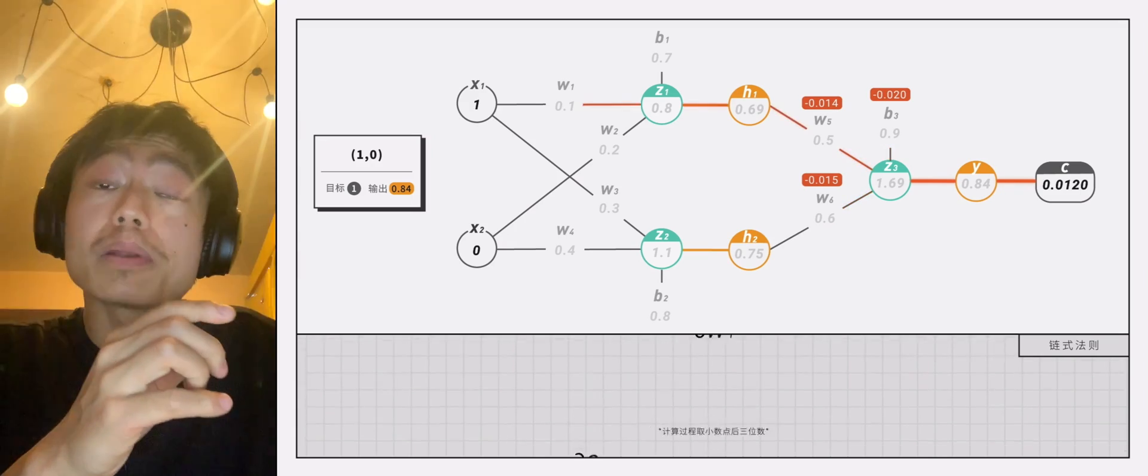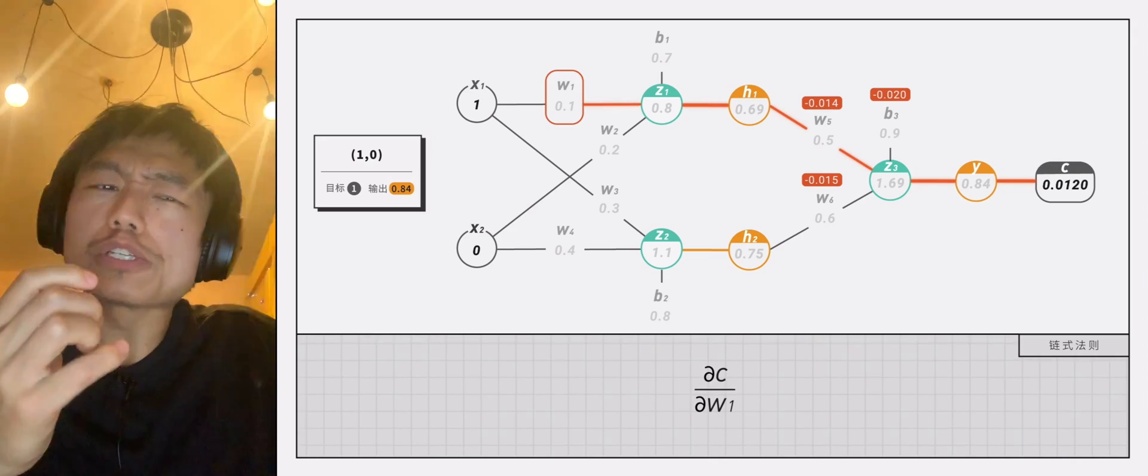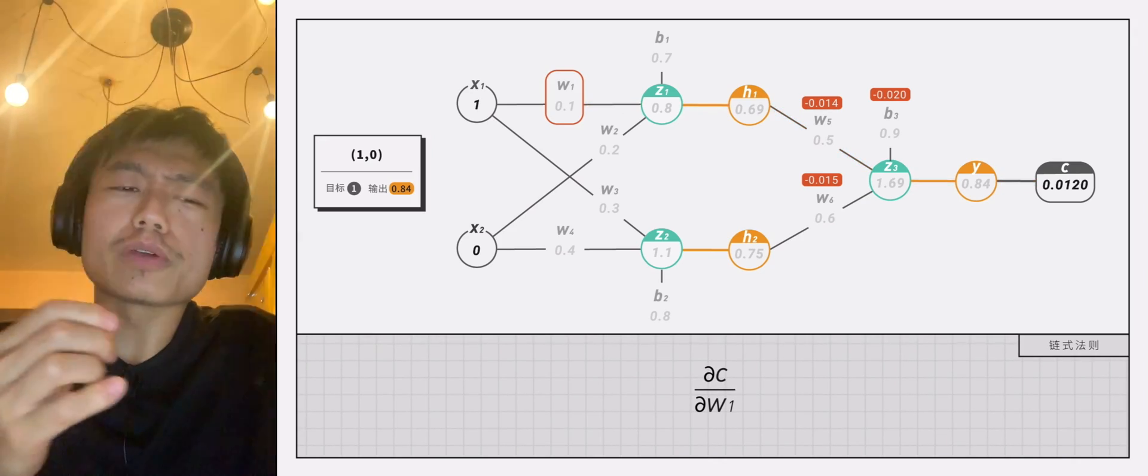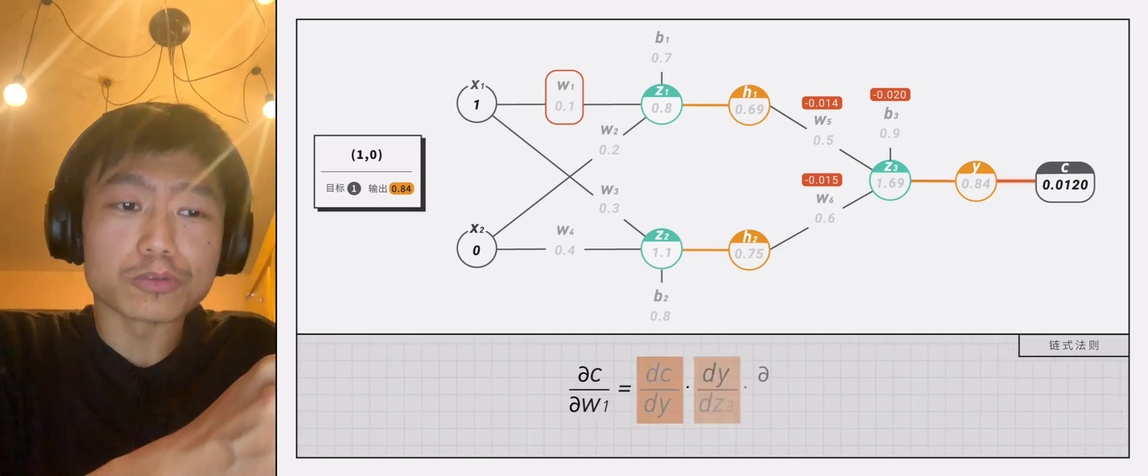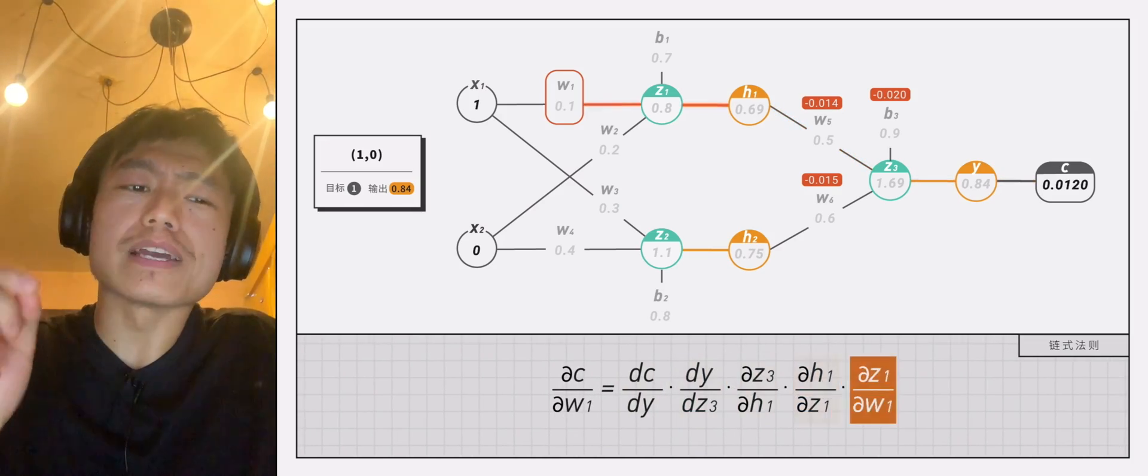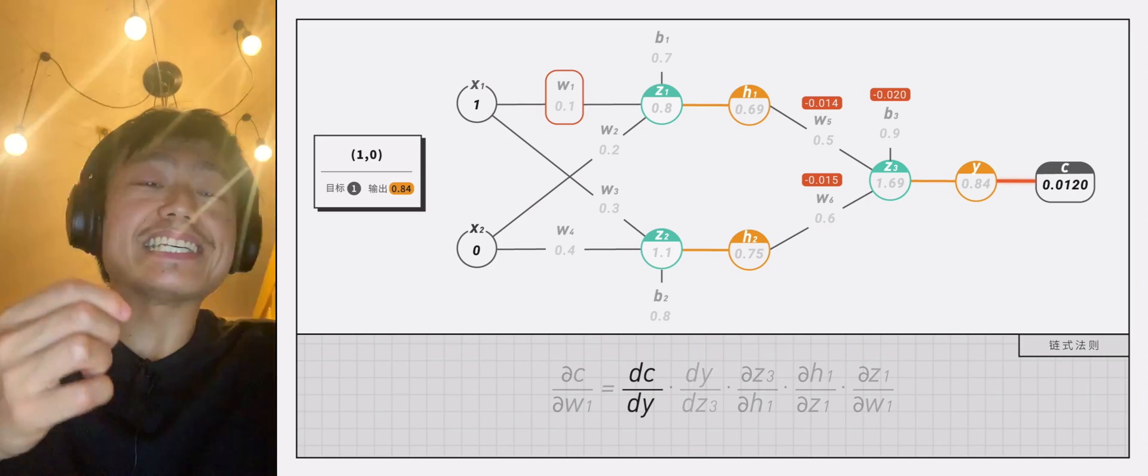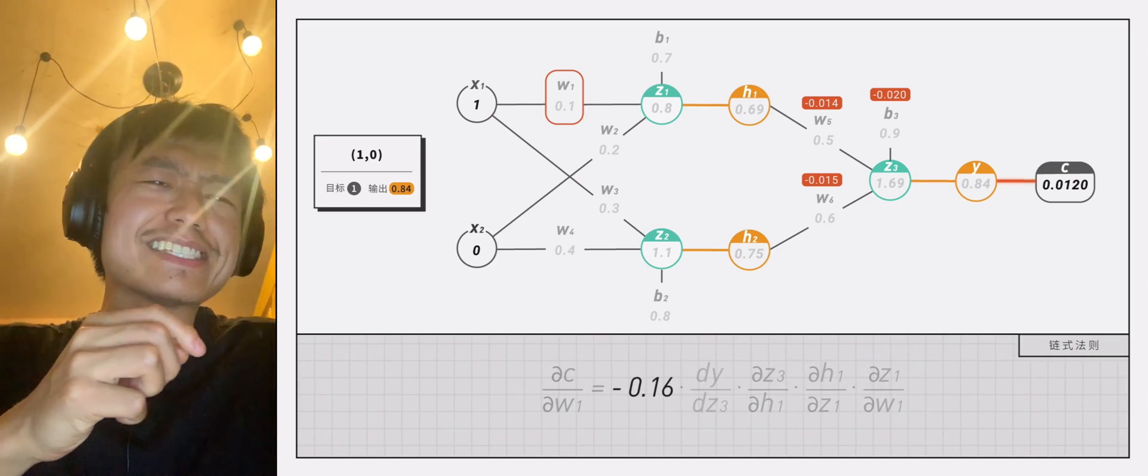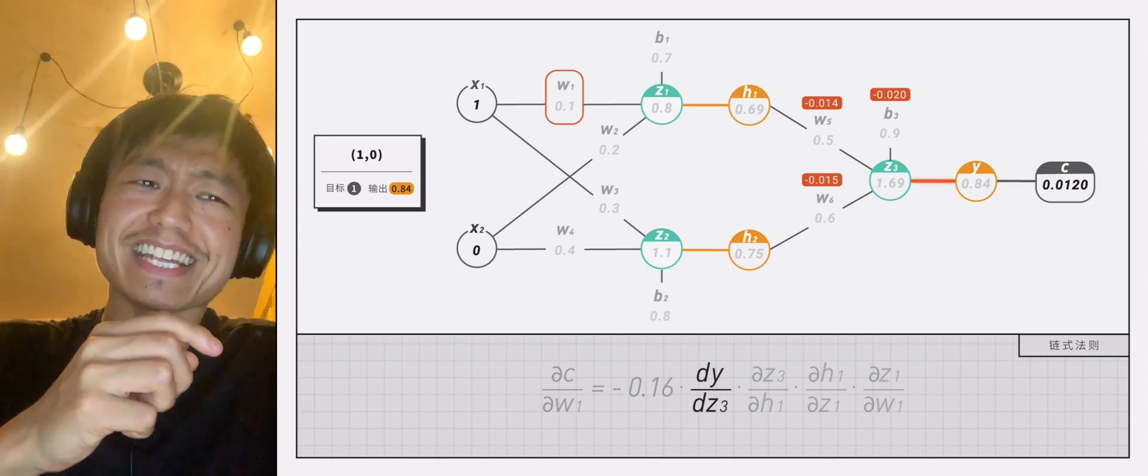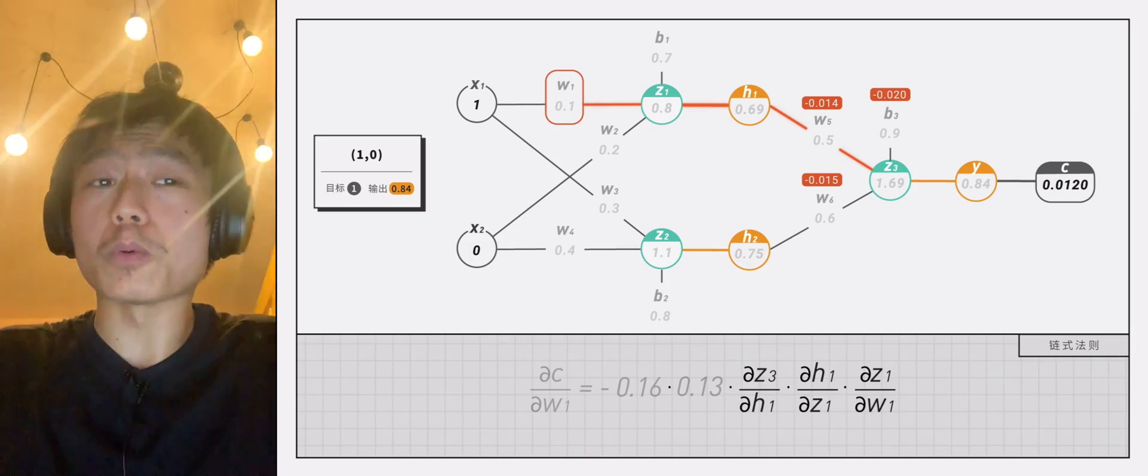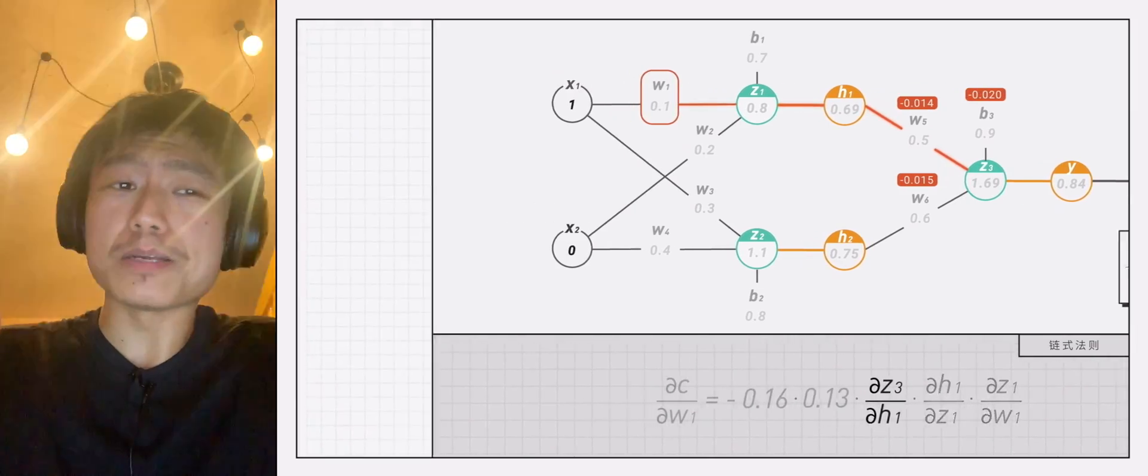We can calculate the top layer w1, which has a longer partial derivative equation. You need to calculate these five values. We have just calculated the values of the first and the second. dc divided by dy is negative 0.16. dy divided by dz3 is 0.13. There are three items left.